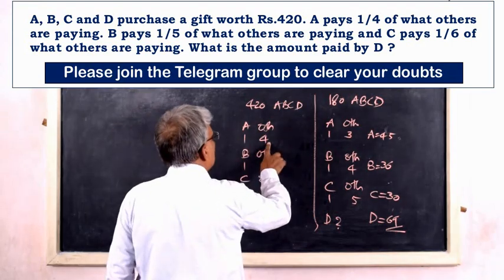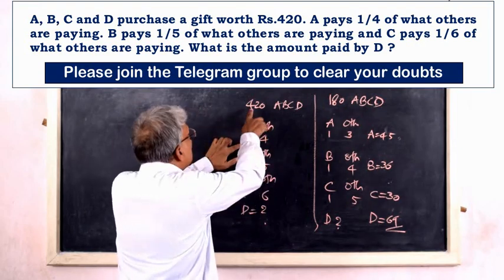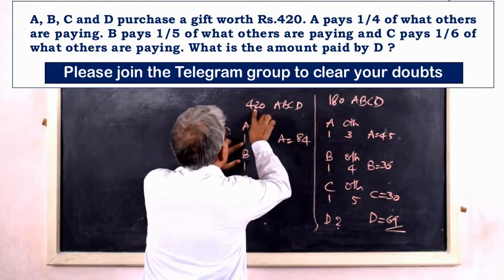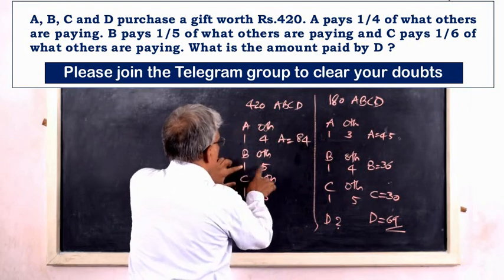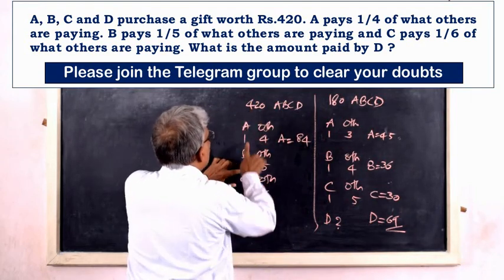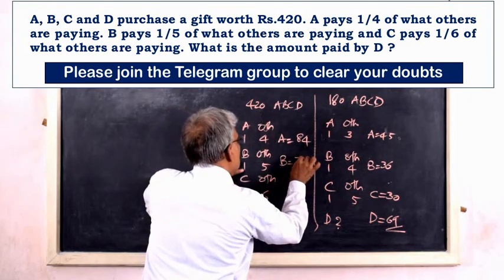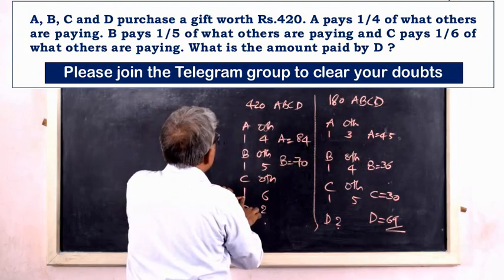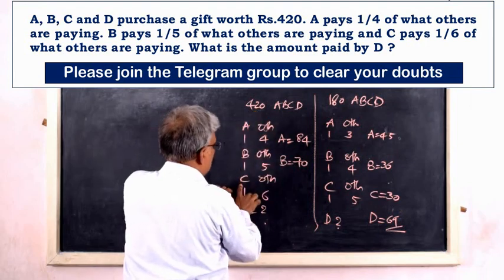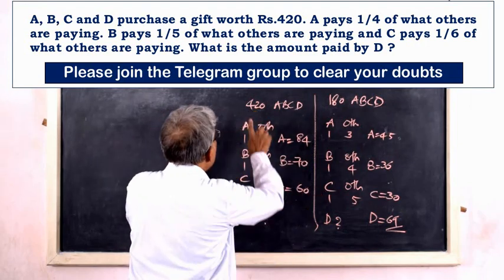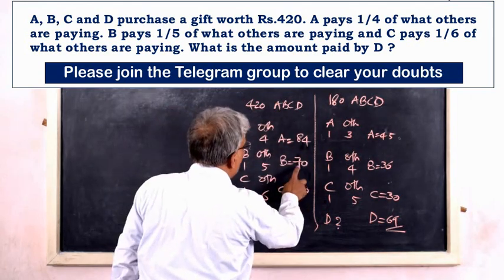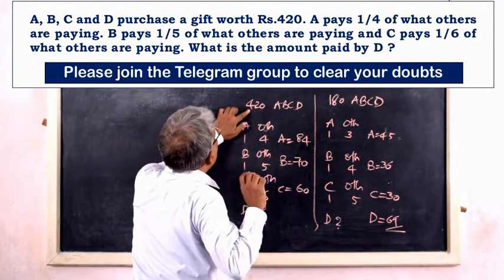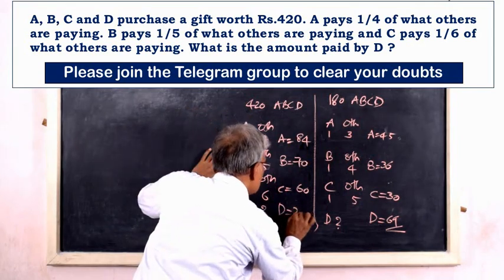Total denominator for A is 5; 420 divided by 5 equals 84, so A equals 84. Total for B is 6; 420 divided by 6 equals 70, so B equals 70. Total for C is 7; 420 divided by 7 equals 60, so C equals 60. Total of A, B, C is 214. D equals 420 minus 214, so D equals 206.